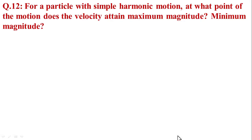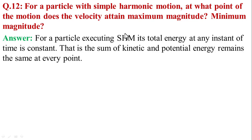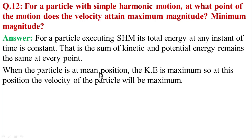In question number 12, for a particle with simple harmonic motion, at what point does the velocity attain the maximum magnitude and also the minimum magnitude? For a particle executing simple harmonic motion, its total energy at any instant is constant — that is, the sum of kinetic energy and potential energy remains constant at every point. When the particle is at the mean position, the kinetic energy is maximum, so the velocity of the particle will be maximum.